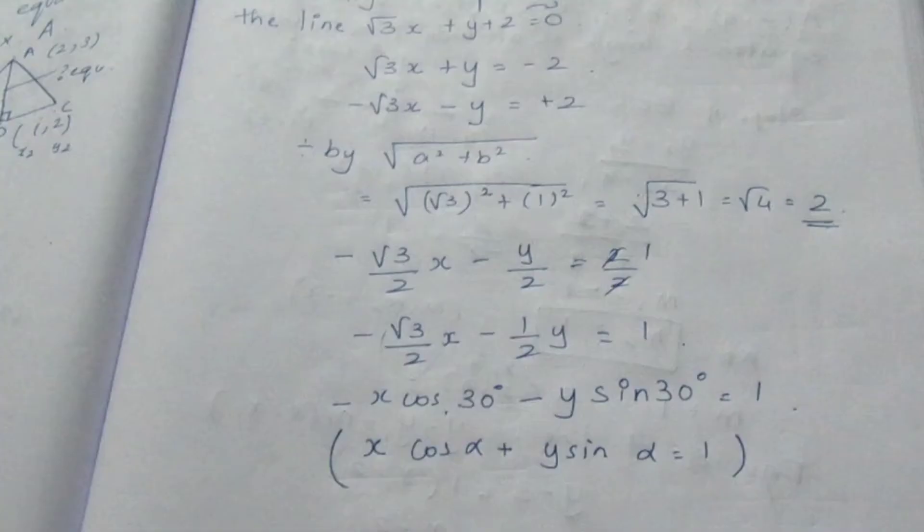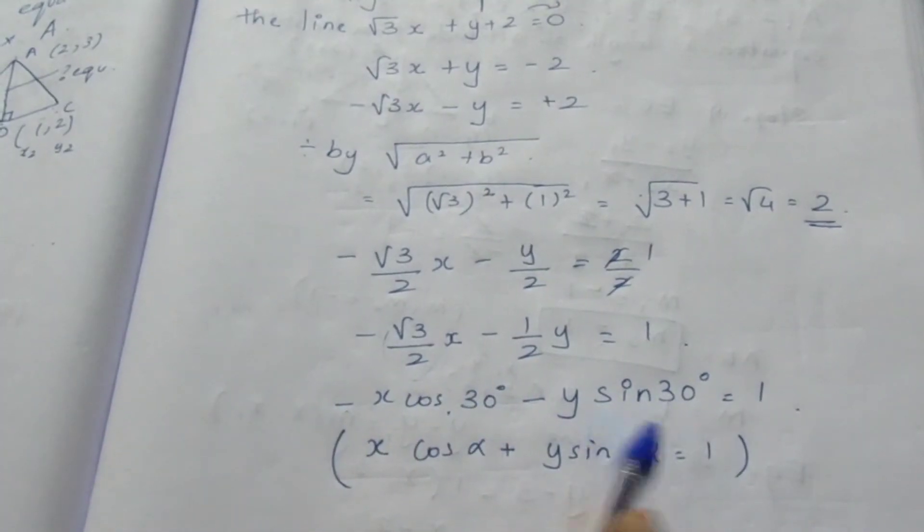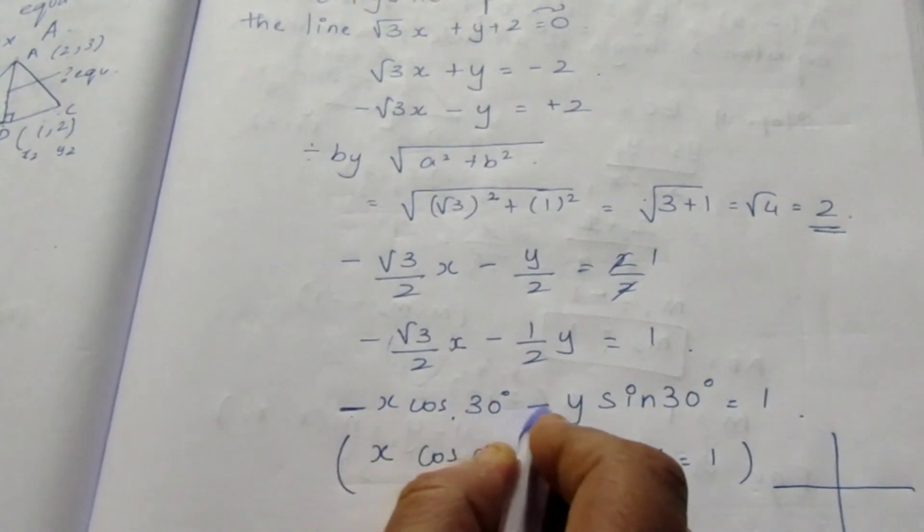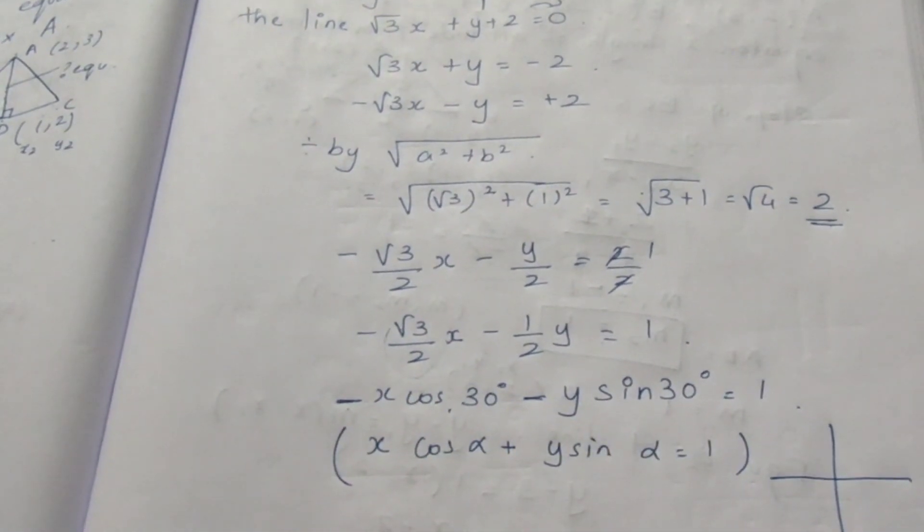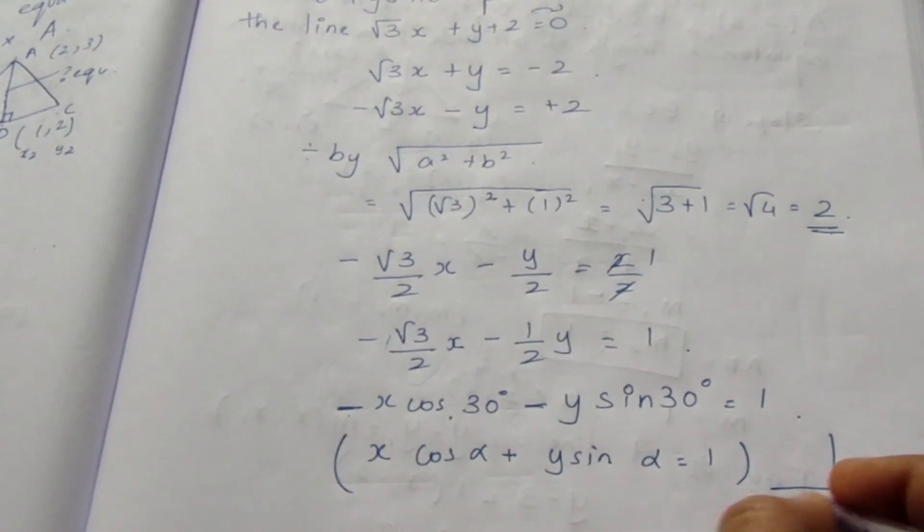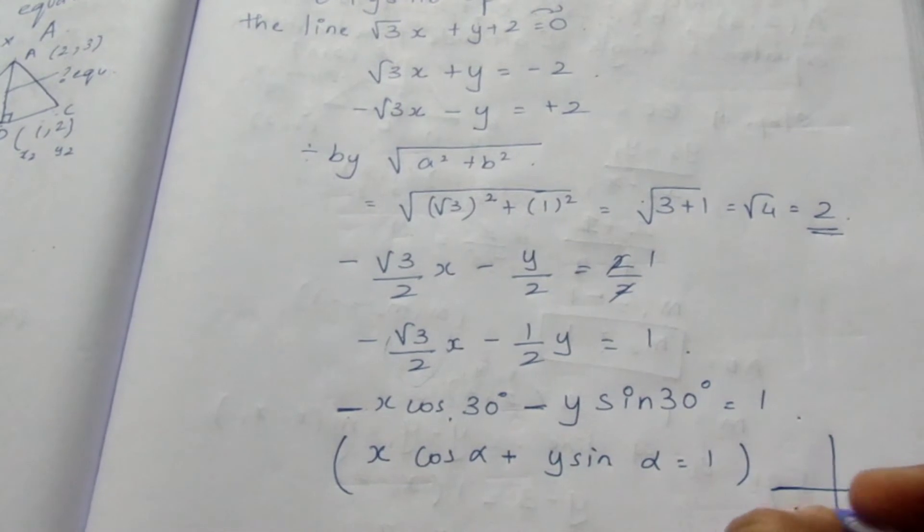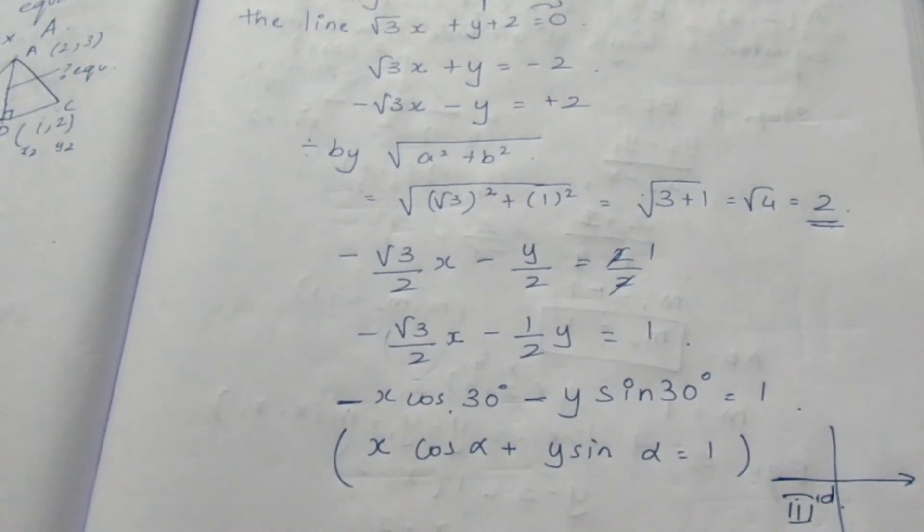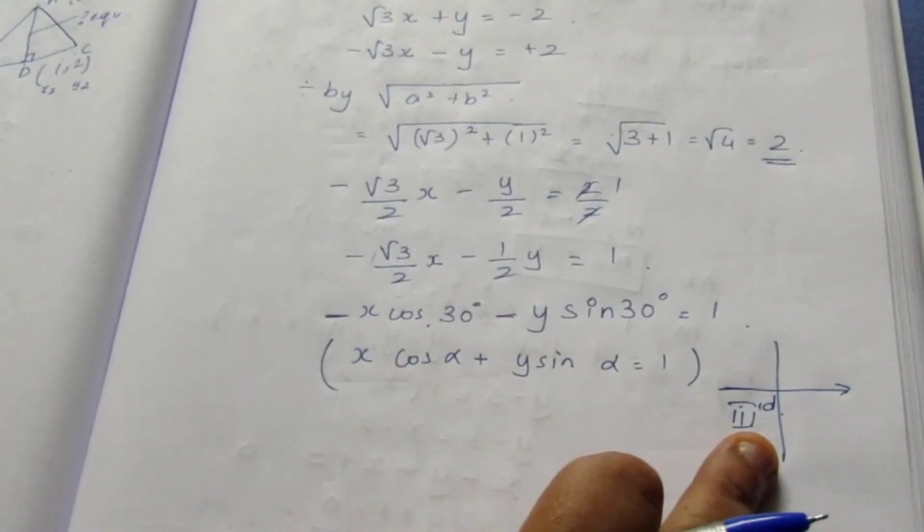Cos 30 and minus of sin 30. If both are negative, you see x value is negative and y value is negative. That means both negative lies in the third quadrant. Both negative value lies in the third quadrant.